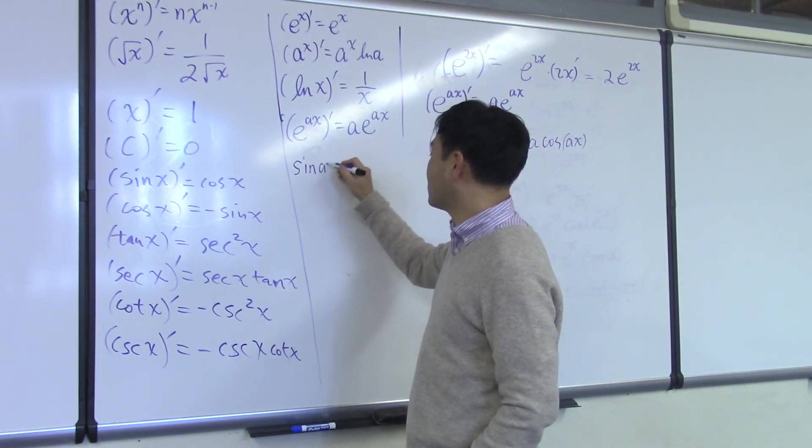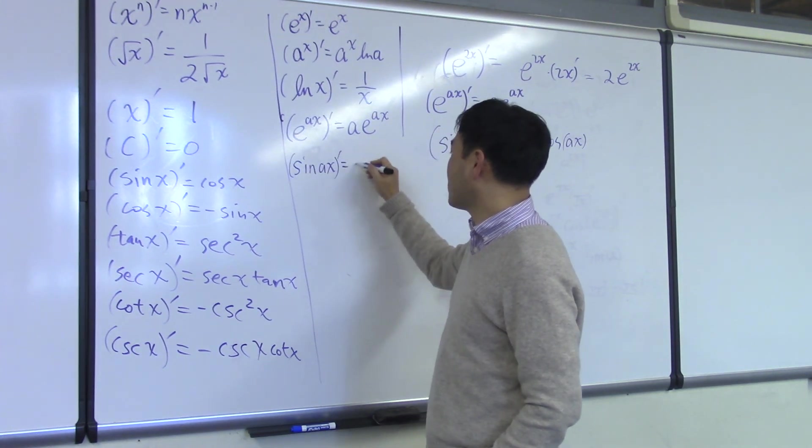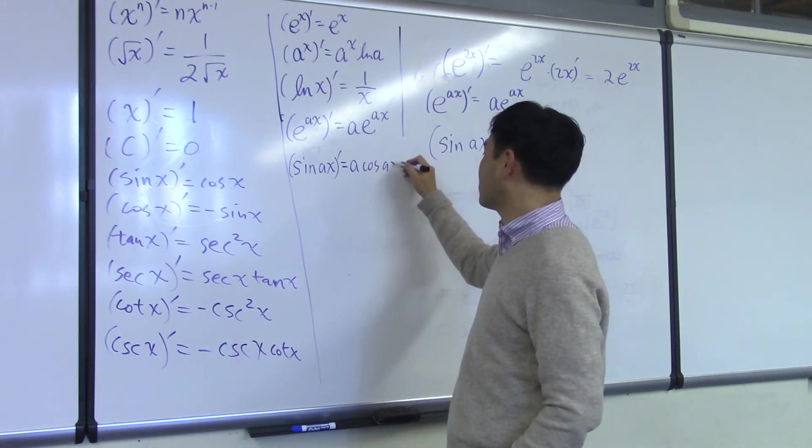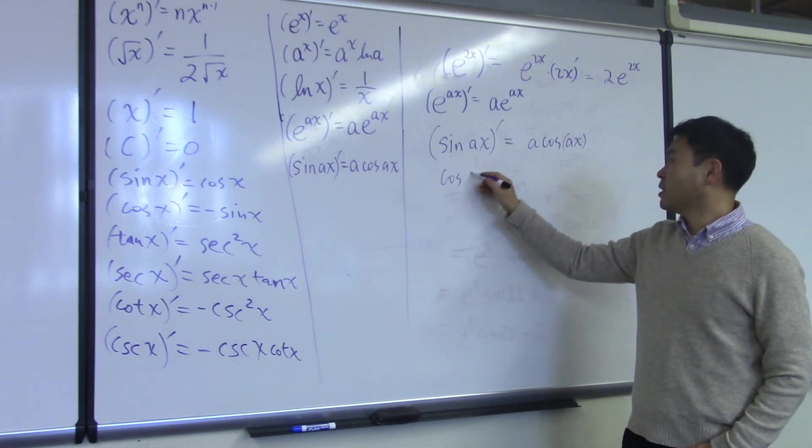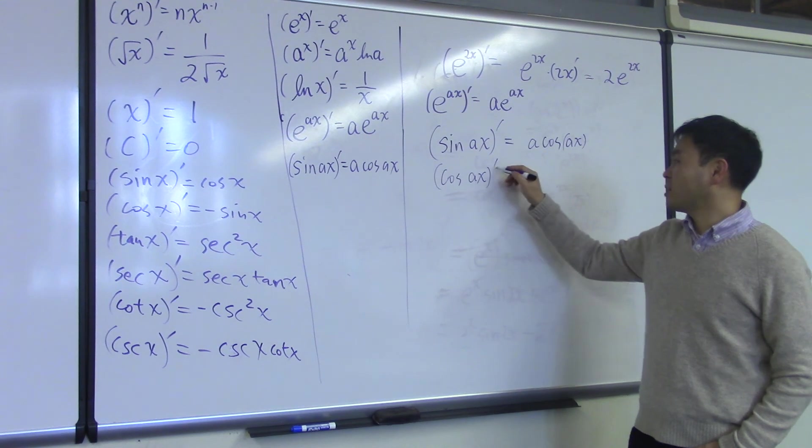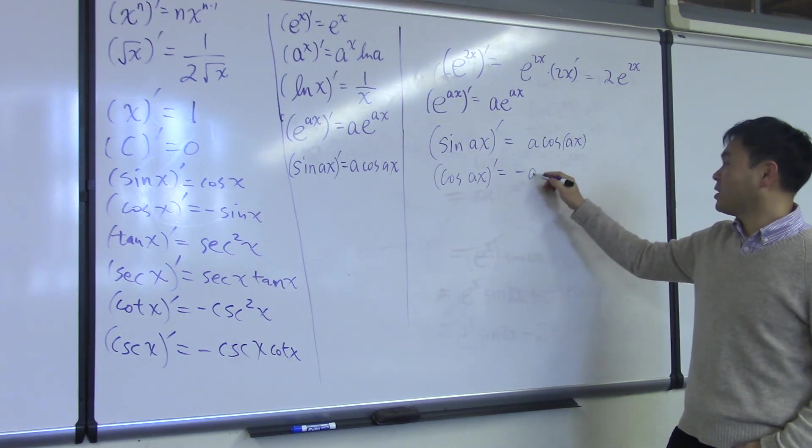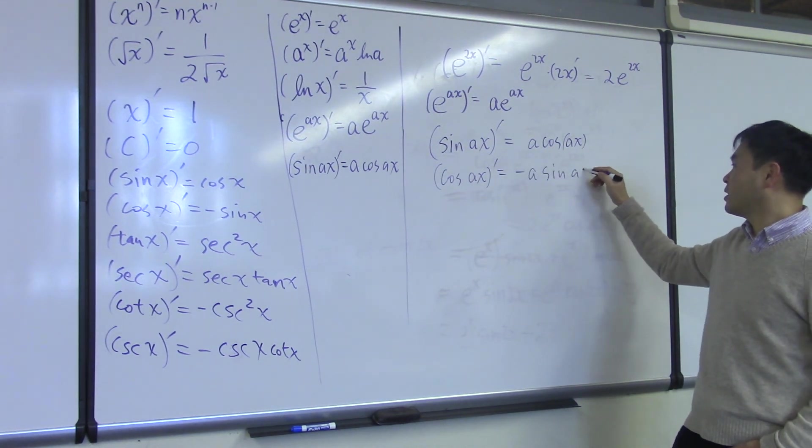Sine ax prime is a cosine ax. And also, cosine ax prime gives you negative a sine ax.